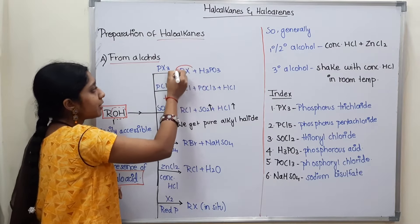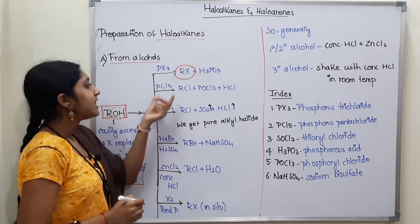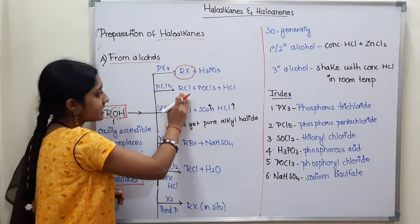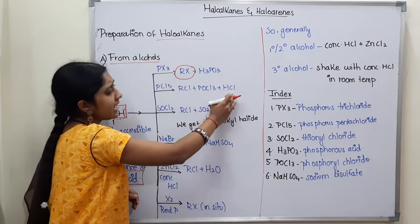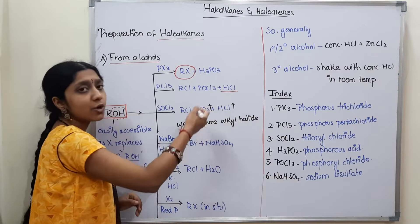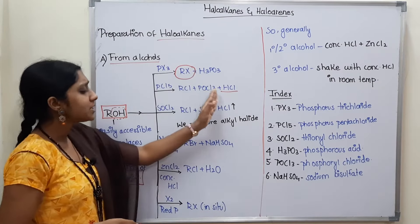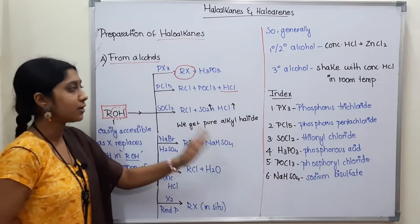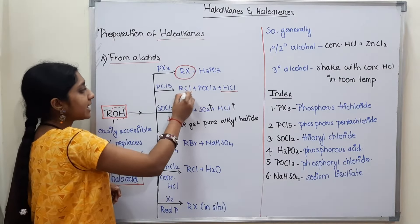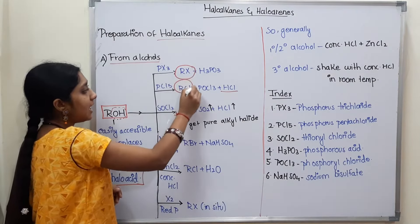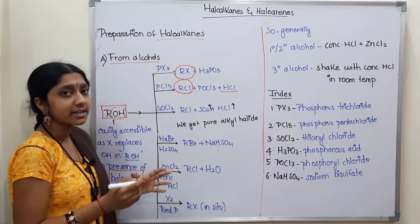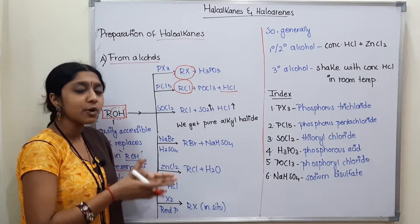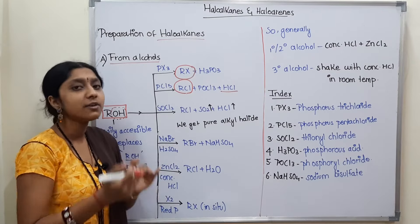The second reagent is PCl₅ — phosphorus pentachloride. The reaction gives: ROH + PCl₅ → RCl + POCl₃ + HCl. HCl is hydrochloric acid and POCl₃ is phosphoryl chloride. The product RCl contains a chlorine group, so it is called chloroalkane or alkyl chloride.